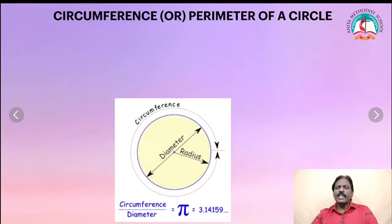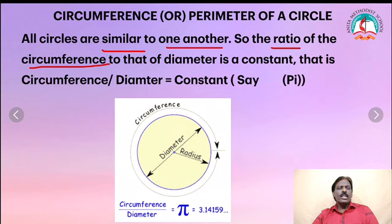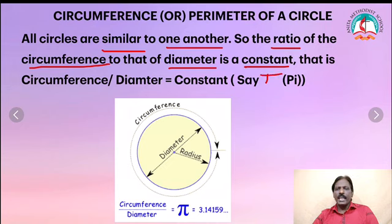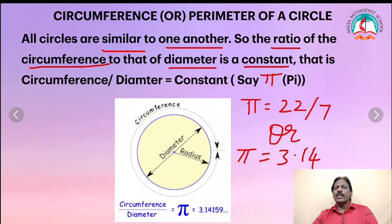Now, what is the circumference or perimeter of a circle? We can say circumference or perimeter - both have the same meaning. All circles are similar to one another, so the ratio of the circumference to that of diameter is a constant. That is, circumference divided by diameter is equal to a constant, and we say pi. Pi is a constant, so pi is equal to 22 by 7, or we can also write 3.14. Pi has 2 values: you can either write 22 by 7 or 3.14.